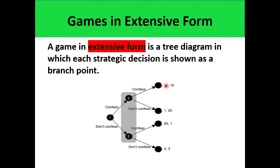The first coordinate is the payoff for player 1, while the second coordinate is the payoff of player 2. For example, if player 1 chooses to confess and player 2 chooses don't confess, the result is (1, 25). This means player 1 gets 1 while player 2 gets 25.